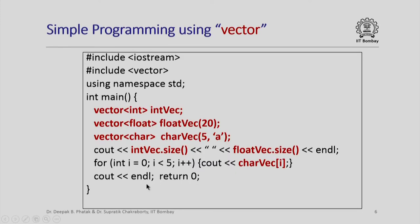Here is a simple program that uses the vector class. Since it is a template class, when declaring a variable I must instantiate the generic type. So 'vector<int> int_vec' is a vector of integers of size 0 by default. 'vector<float> float_vec' of size 20, and 'vector<char> char_vec' of size 5 where each element is initialized with the value 'A' — the ASCII code of the character A.